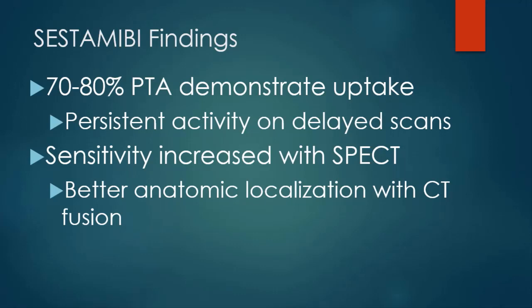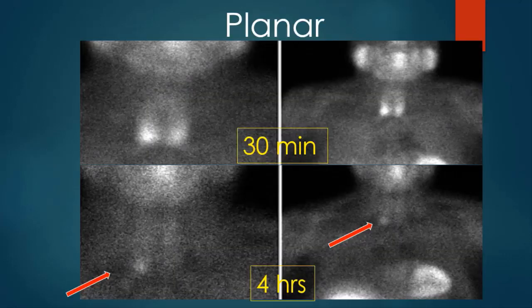About 70 to 80 percent of parathyroid adenomas demonstrate significant uptake and show persistent activity on delayed images. Typically, exams are performed at 30 minutes and about 4 hours. Sensitivity increases with SPECT, and anatomic localization improves with CT fusion. In a patient with single gland disease, the 30-minute image shows activity in many places, but at 4 hours there is persistent activity at a right inferior pole lesion, surgically confirmed to be a parathyroid adenoma.